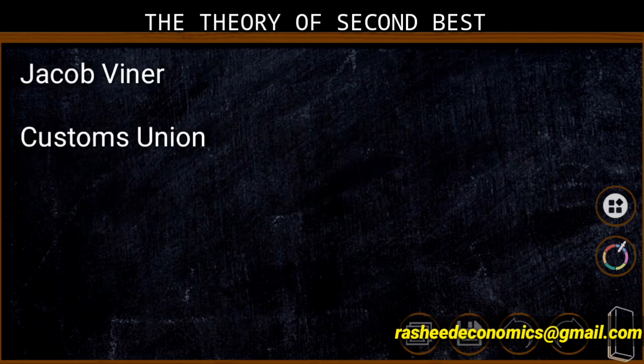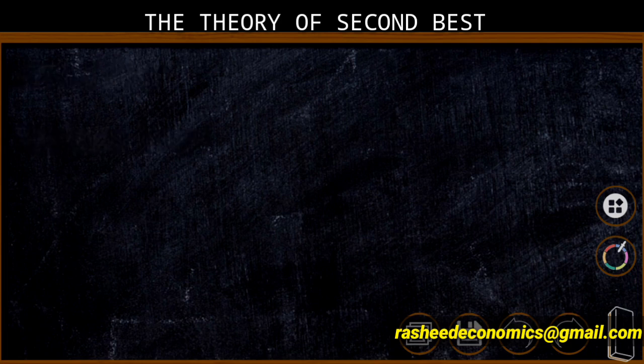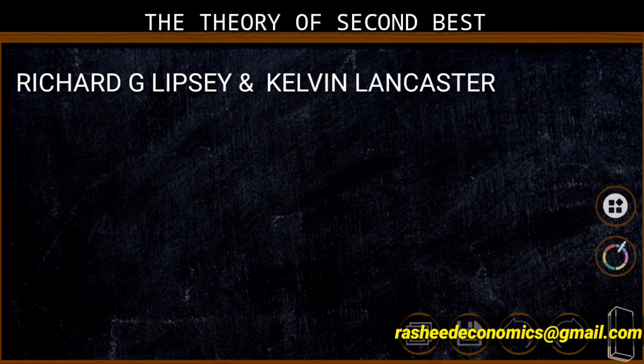Jacob Viner, one of the famous economists, did pioneering work in the theory of second best when he was dealing with the problem of customs union. Later, economist R.G. Lipsey and Kelvin Lancaster tried to modify it and presented it in a systematic manner — they presented a generalized form of the theory of second best.